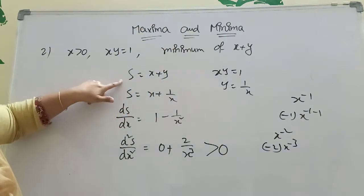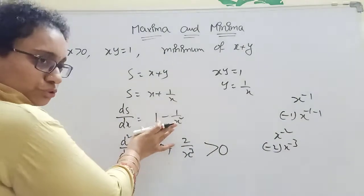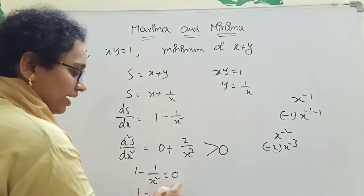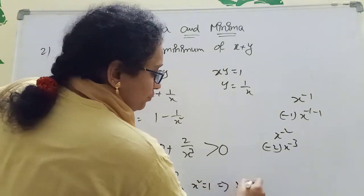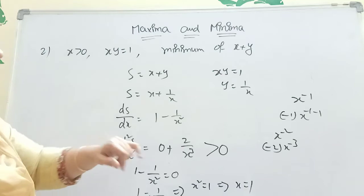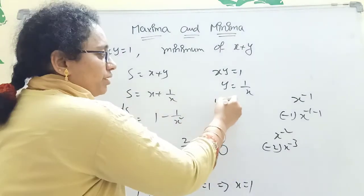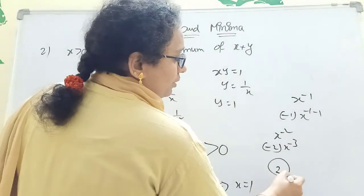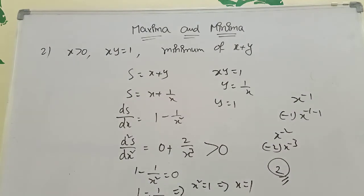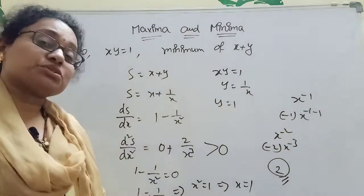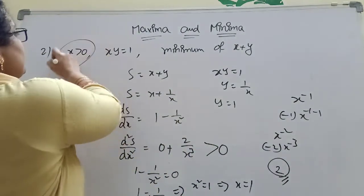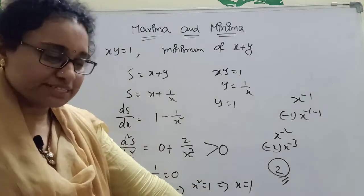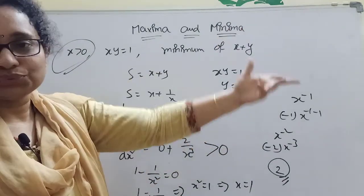To find the minimum value, set DS/DX = 0: 1 − 1/X² = 0, which gives X² = 1, so X = ±1. Since X > 0 is given, we take X = 1. Then Y = 1/X = 1 as well. So X + Y = 1 + 1 = 2. The minimum value of X + Y is 2. Because X > 0, we only take positive values, so X = 1, Y = 1, and X + Y = 2.